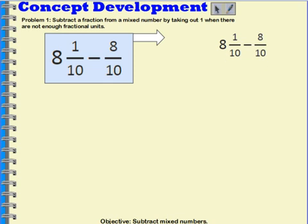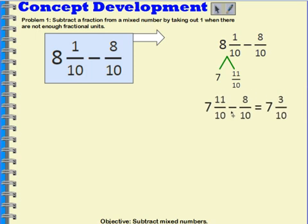So what I'll do is I'm going to think about 8 and 1 tenth as a number bond of 7 and 11 tenths. And here's why that works. 7 plus 1 is 8. 10 tenths is equal to 1. So 7 plus 10 tenths plus this 1 tenth would be 7 and 11 tenths. Now I can subtract 7 and 11 tenths minus 8 tenths equals 7 and 3 tenths.